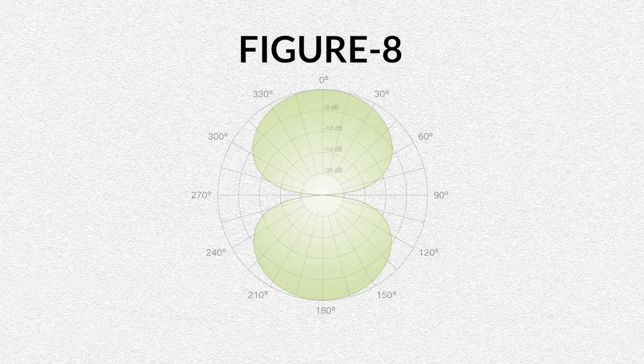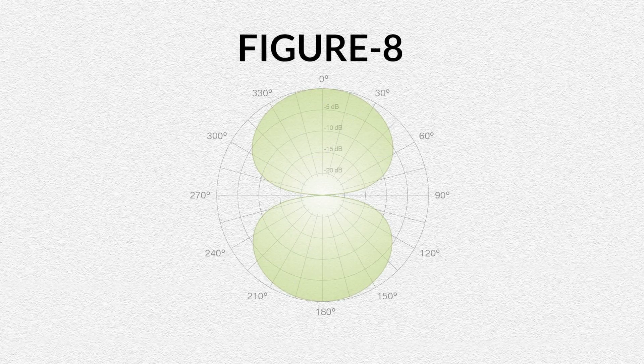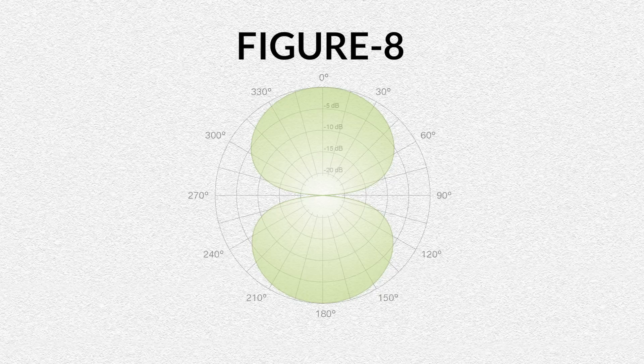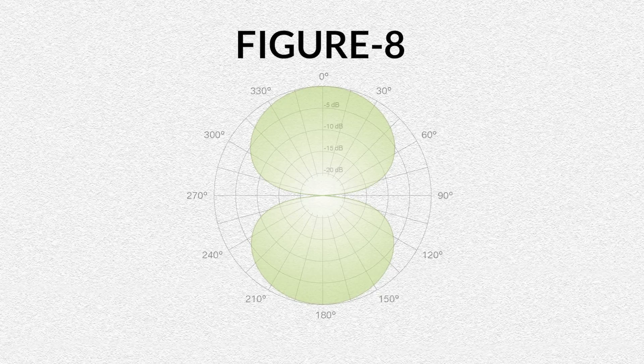The next pattern is figure eight, also called bidirectional. You can remember its name by its shape — like a figure eight. This polar pattern picks up sound equally in the front and rear, but not as much from the sides. It's commonly used for dual podcasters or backing vocals, where two people can share the same microphone using each side. It's also commonly used for stereo recording techniques, saving money by requiring fewer mics.